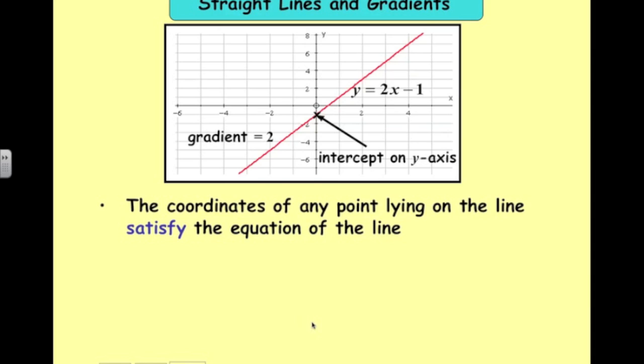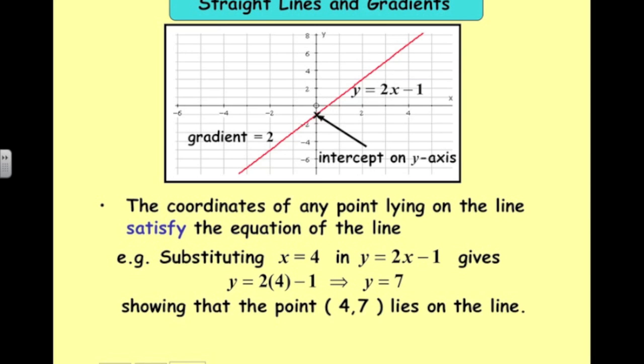So the coordinates of any point lying on the line satisfy the equation. So if we substitute x equals 4 into there, we get y equals 7. So that's a point on the line, 4, 7.